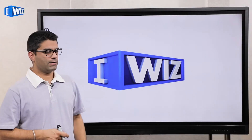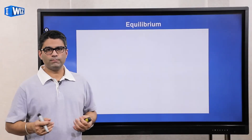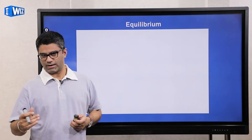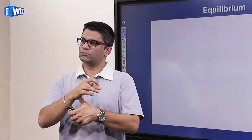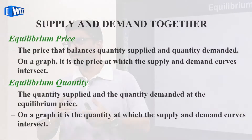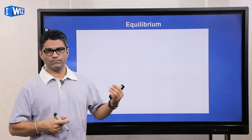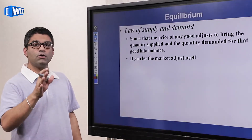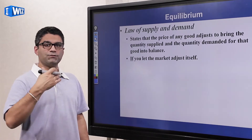Hey guys, hope you're doing well. We're getting back to analyzing what it means to be in equilibrium in a competitive market. We've looked at both the demand side and the supply side. You should be comfortable analyzing what the equilibrium price and equilibrium quantity are, and what happens if we are not in equilibrium. We talked about surpluses and shortages and how the market gets back to equilibrium.